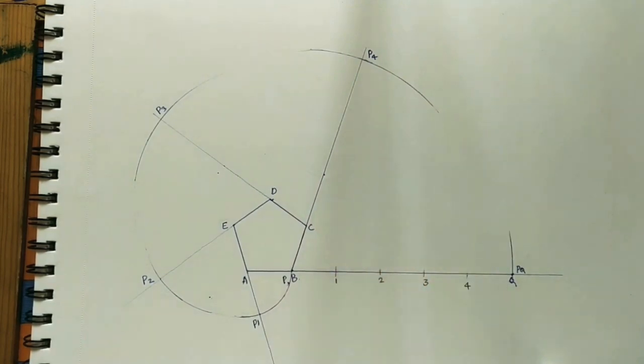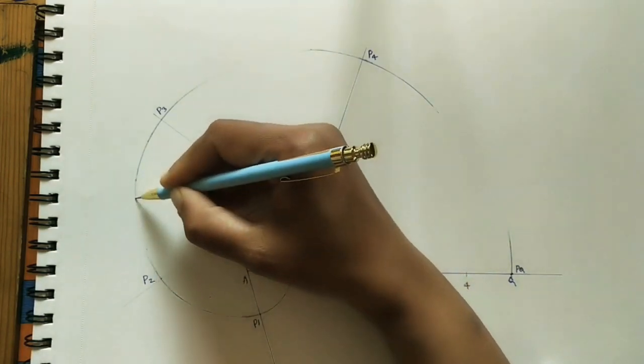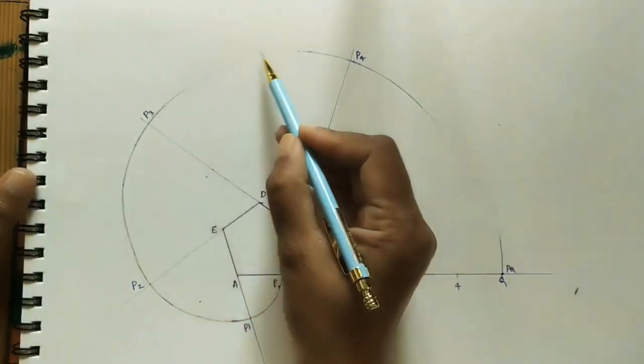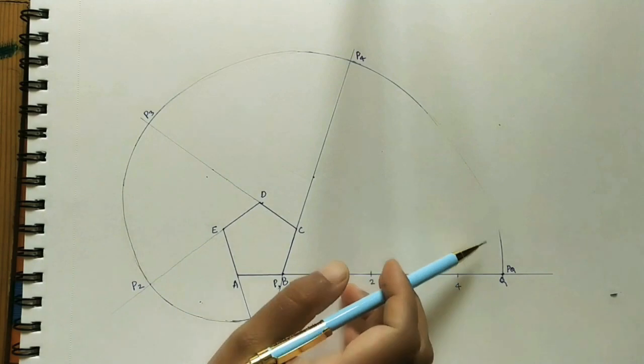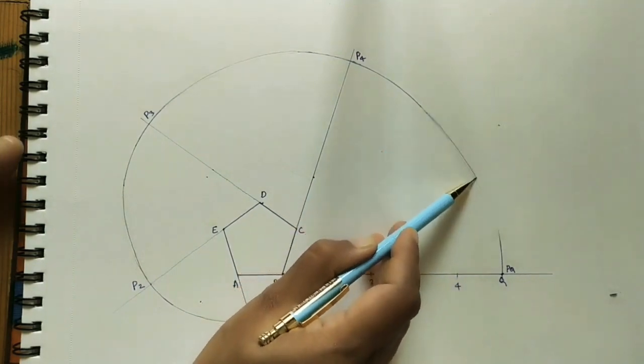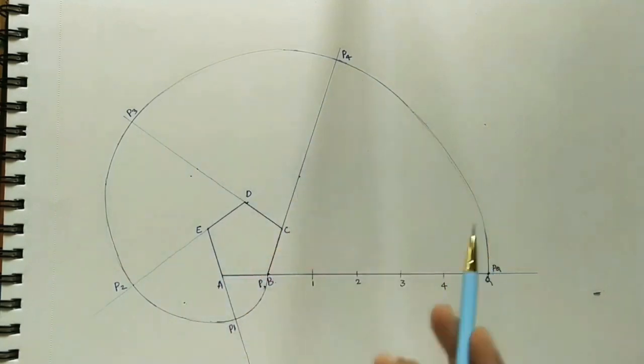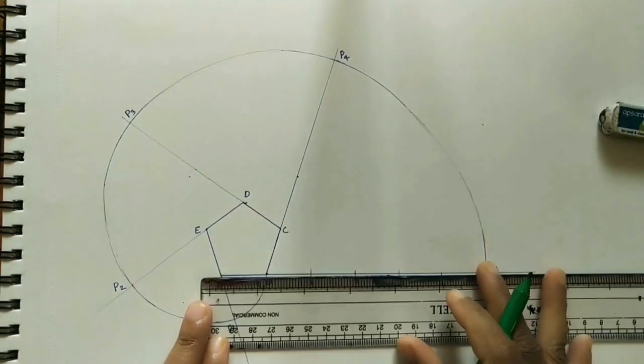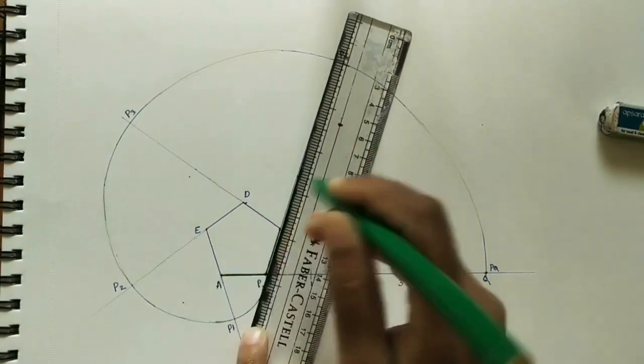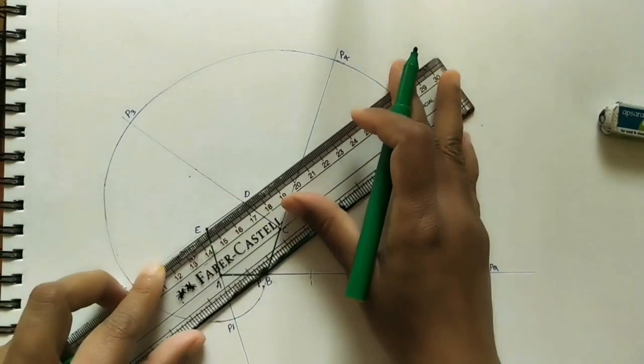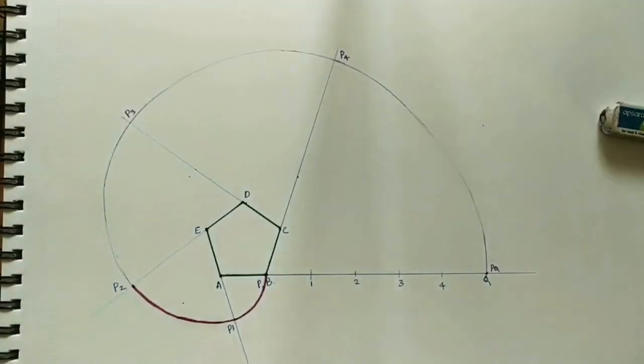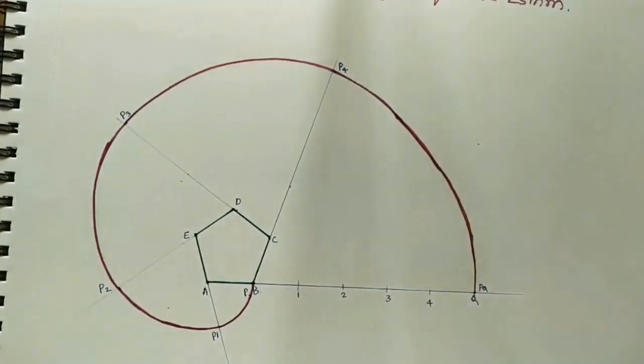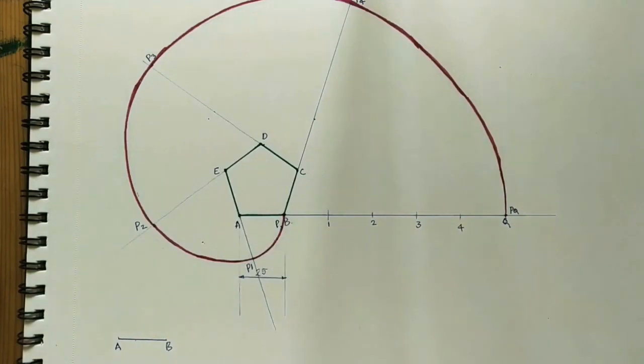Join all the P points. We will get the involute. Do the curve with the free hand. And join the arcs. Join P4, PQ. Make it dark of this involute and this pentagon also. And make this curve also dark. Mark the given dimension 25mm for this involute of a pentagon.